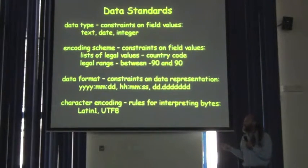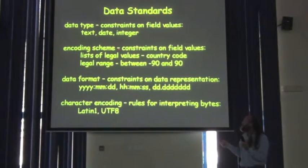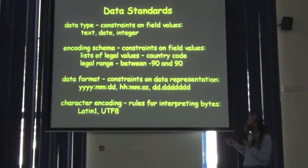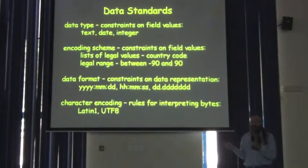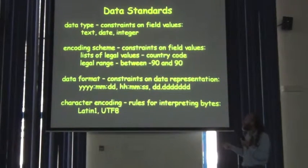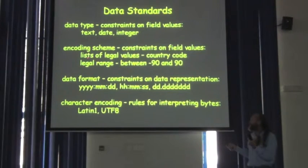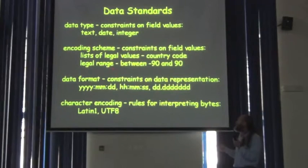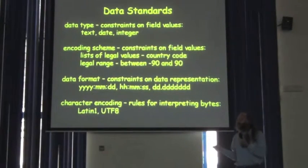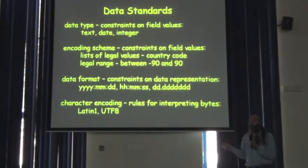Encoding schemes are another kind of constraint on field values. They tend to be two different kinds. One is a list of legal values — you might call this a controlled vocabulary, a list of legal terms, anything that constrains or gives you the list of possible values that you're supposed to put in the field. An example of an encoding scheme is a country code. A language code might be another one. These pervade our standards and help us communicate by eliminating the diversity of information that can go into a particular field. The other type of encoding scheme is a range. Latitude, for example — it's not meaningful to have a latitude value outside the range of minus 90 to plus 90, so you give it a constraint, a test that says that it's valid.